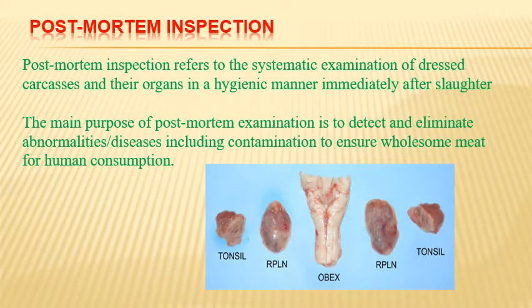So, what is post-mortem inspection? Post-mortem inspection refers to the systematic examination of dressed carcasses and their organs in a hygienic manner immediately after slaughter. The main purpose of post-mortem examination is to detect and eliminate abnormalities or diseases, including contamination, to ensure wholesome meat for human consumption.